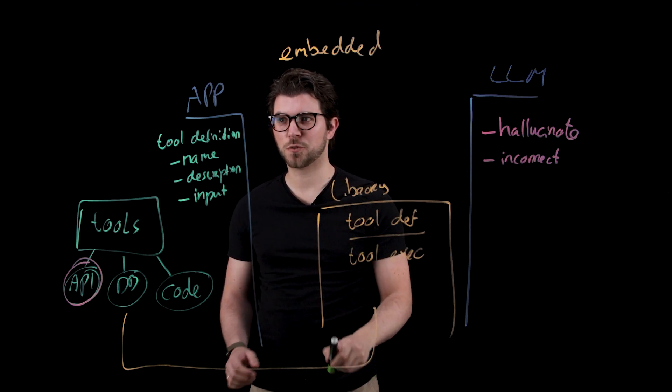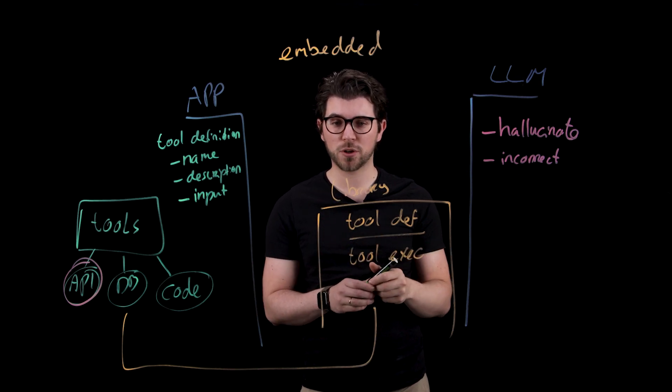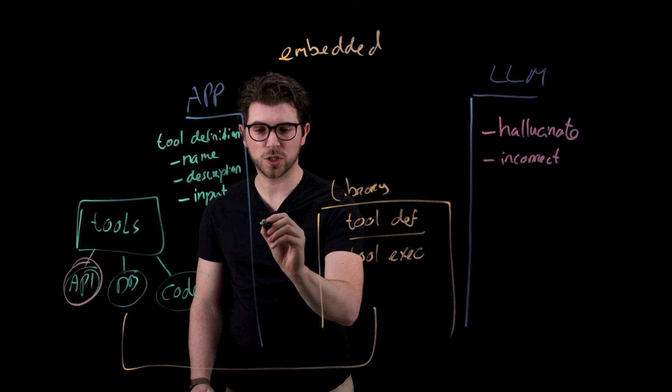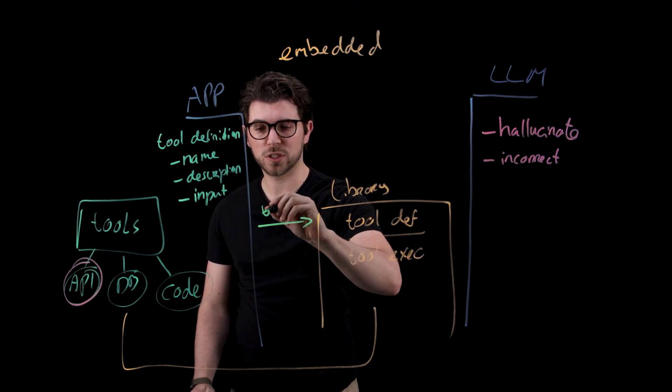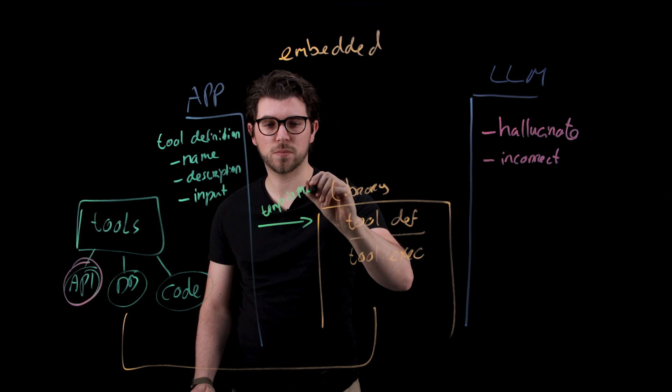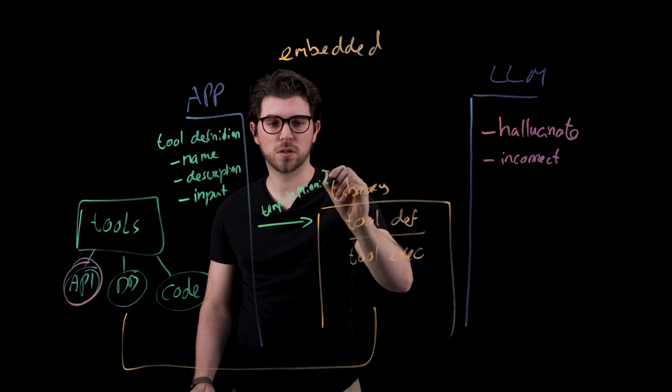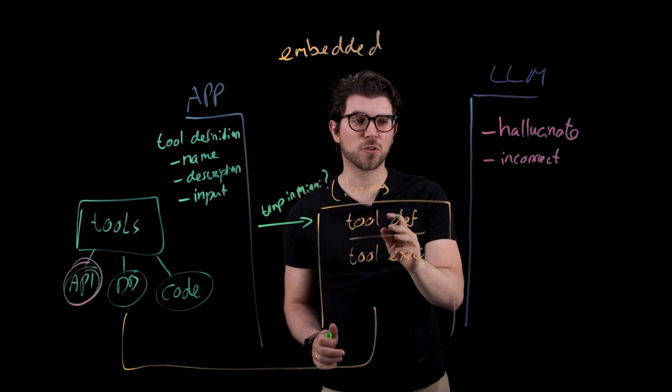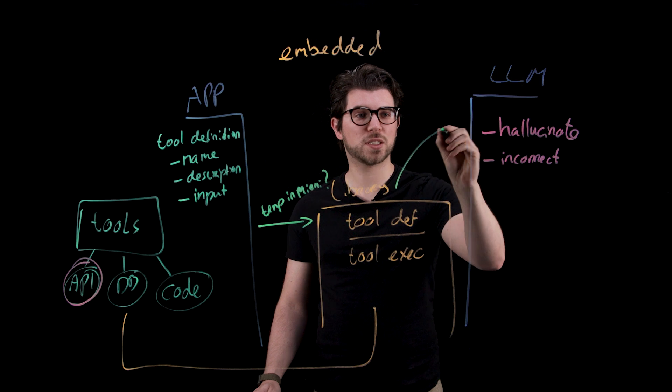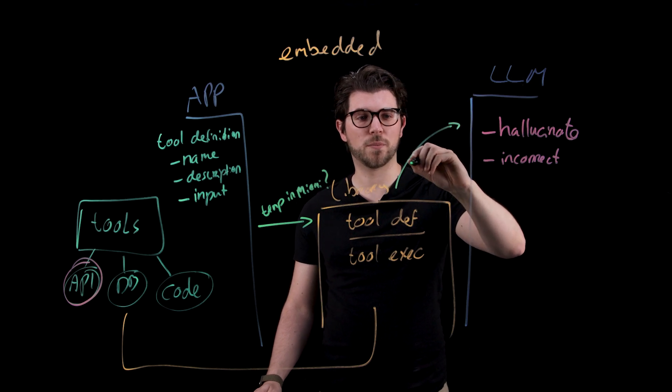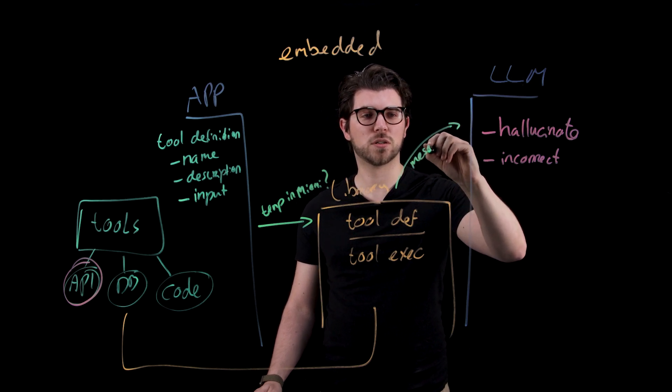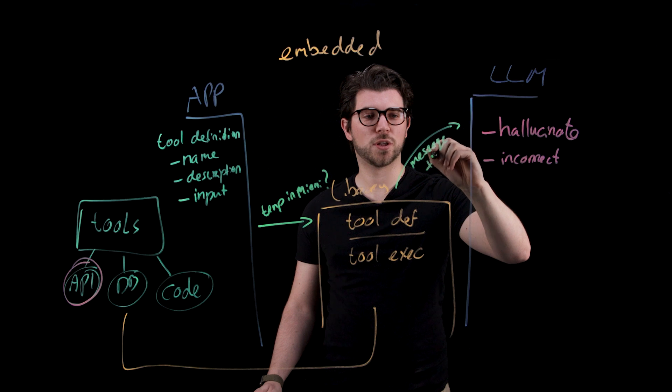So when you send the message from your application to the large language model it will go through the library. So your message could still be what is the temperature in Miami. The library will then append the tool definition and send your message together with the tools to the LLM. So this will be your message plus your list of tools.